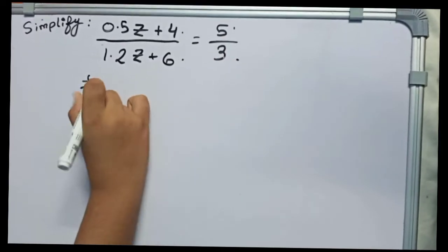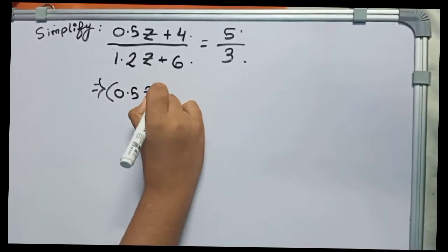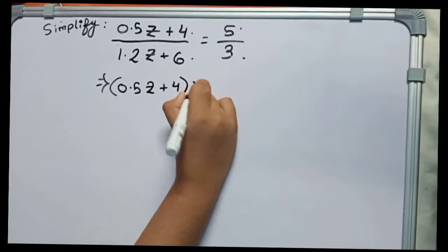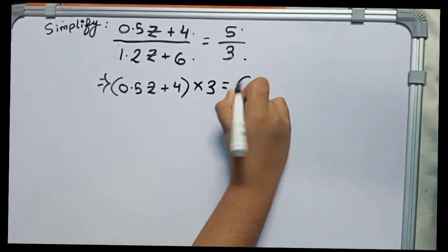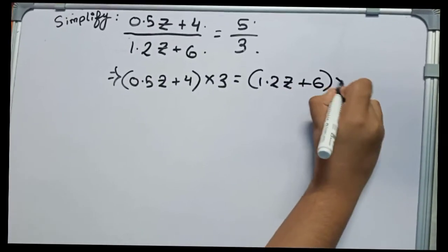This will become 0.5z plus 4 into 3 equals to 1.2z plus 6 into 5.